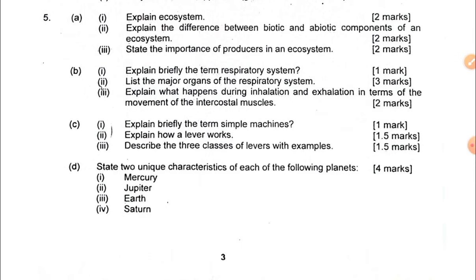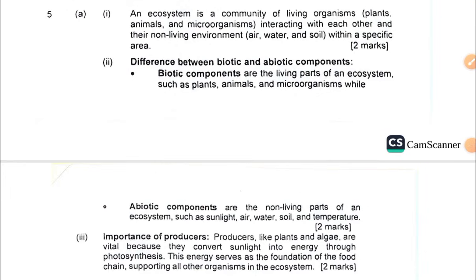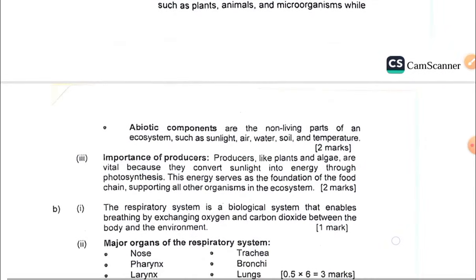Question 4b covers the respiratory system — the main organs and what happens during inhalation and exhalation. Question 4c covers simple machines. Question 4d covers the solar system again, and the difference between biotic and abiotic factors. Biotic refers to the living components of the ecosystem, and abiotic refers to the non-living components. The importance of producers is also discussed.